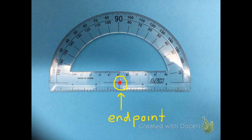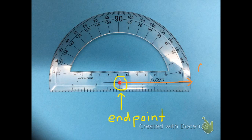The second thing you need to know to use a protractor is that one of our two rays needs to be on zero. So one ray must start on zero.